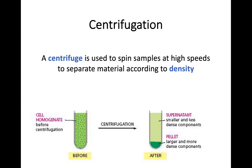We're going to start off with using a centrifuge, something you may have come across before. The centrifuge is basically a machine that you load samples into, and it spins those samples at extremely high speeds in order to separate material according to density. You may have seen this in terms of centrifuging blood samples, for example.